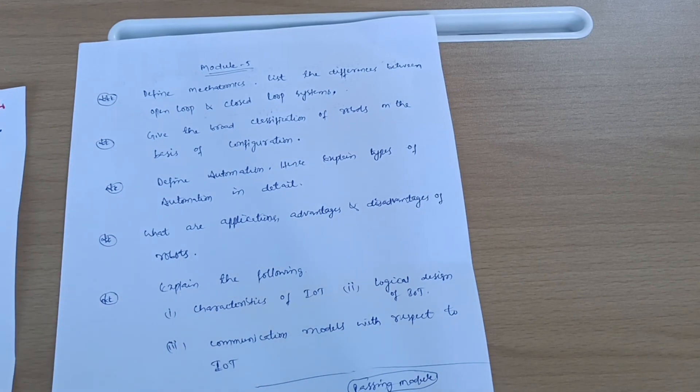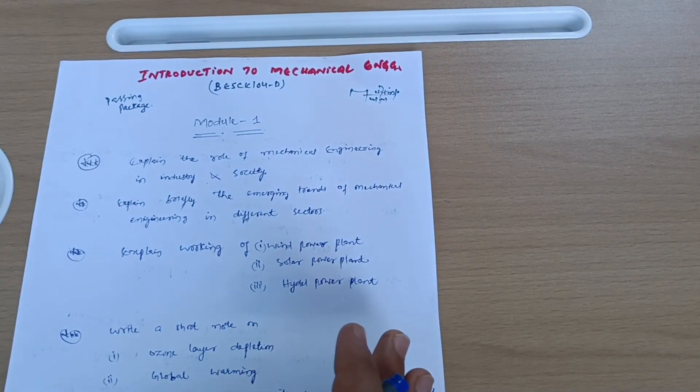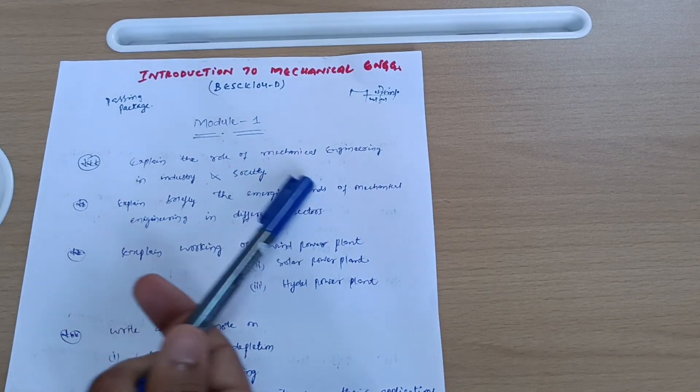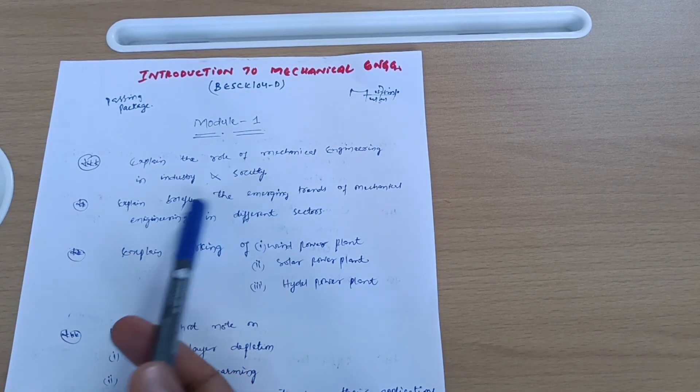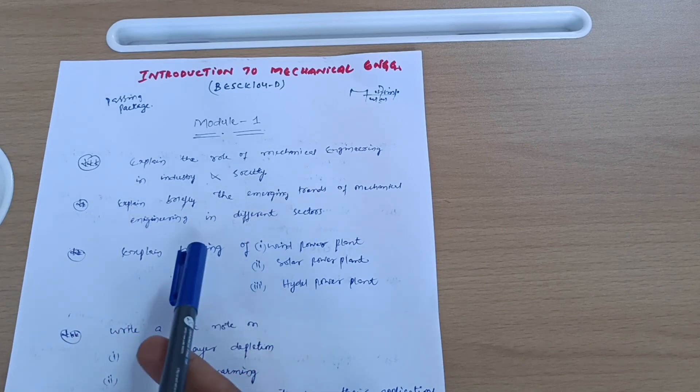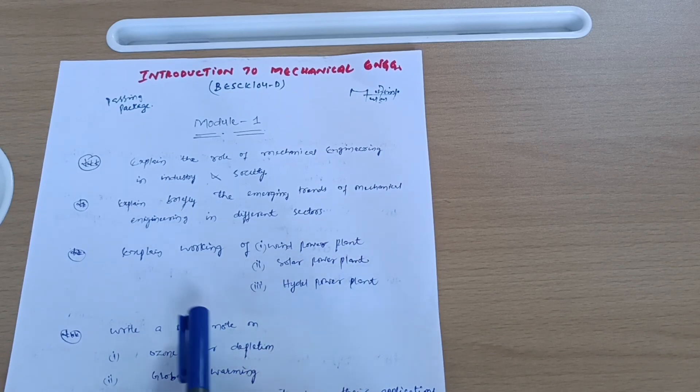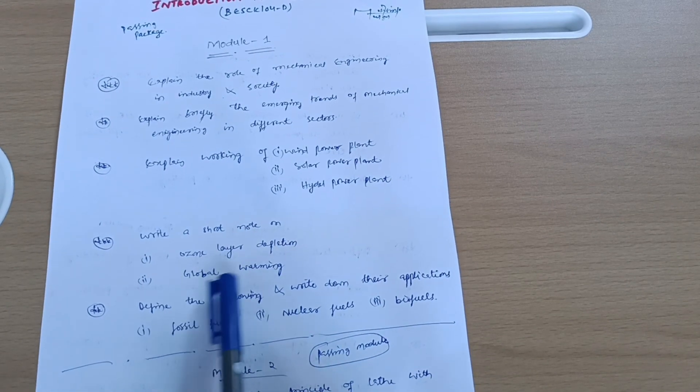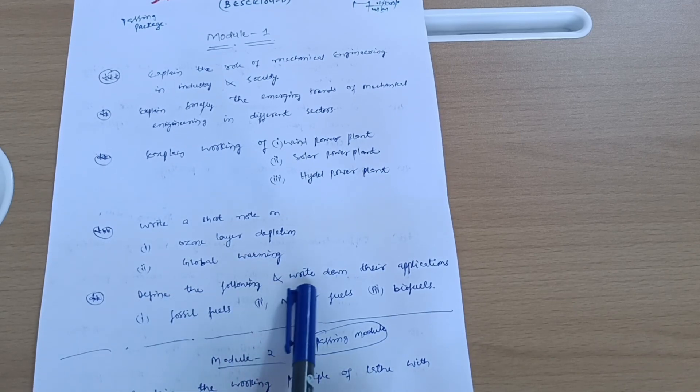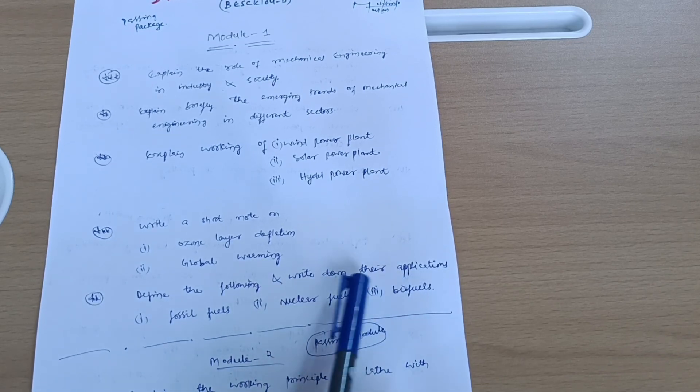Next is Module 1. Explain the role of mechanical engineering in industry and society. Explain briefly the emerging trends of mechanical engineering in different sectors like automotive sector and energy sector. Explain the working of wind power plant, solar power plant, and hydropower plant. Write a short note on ozone layer depletion and global warming. Define the following and write down their applications: fossil fuels, nuclear fuels, and biofuels.